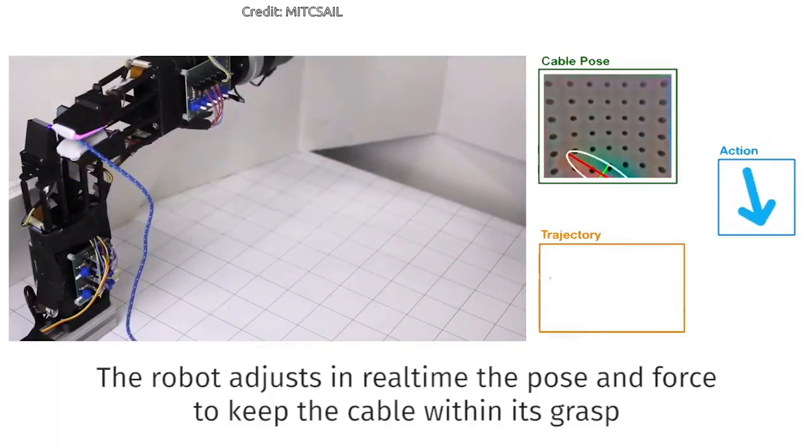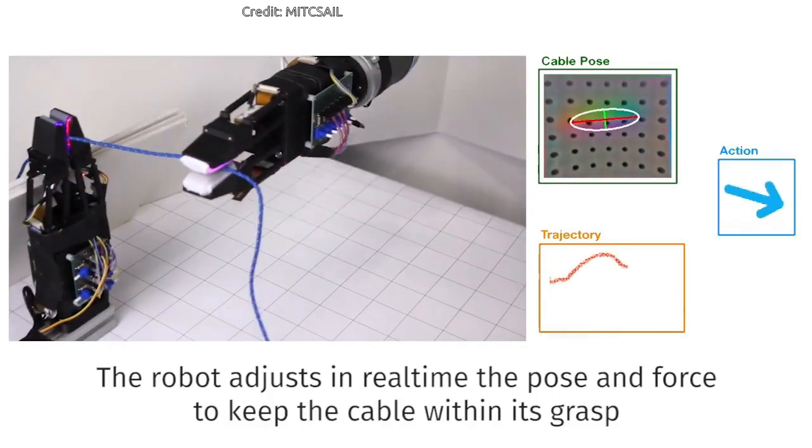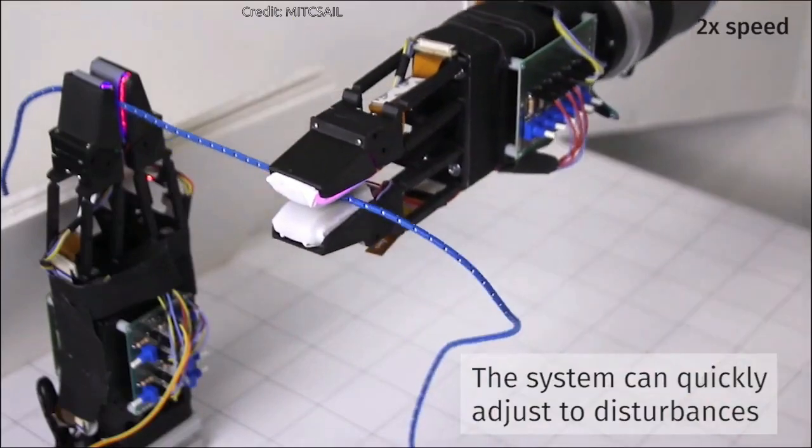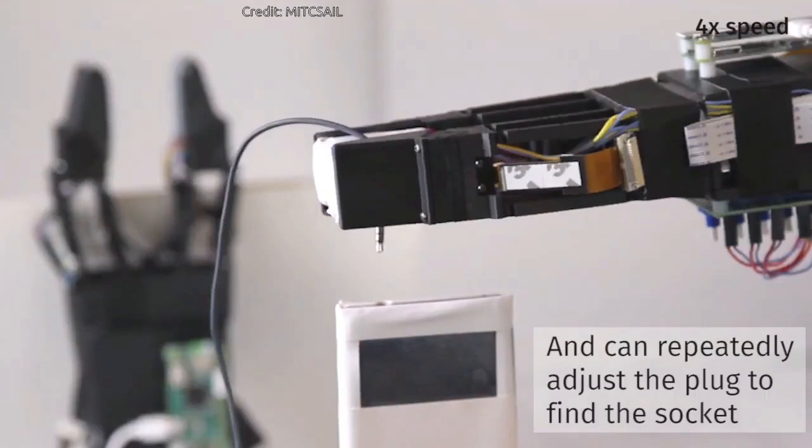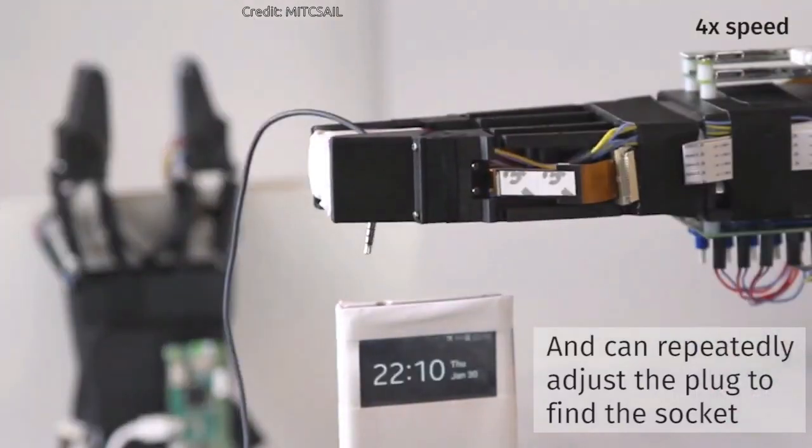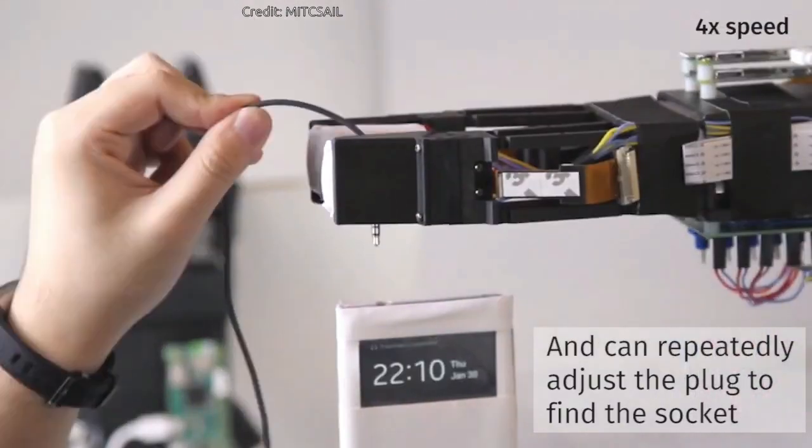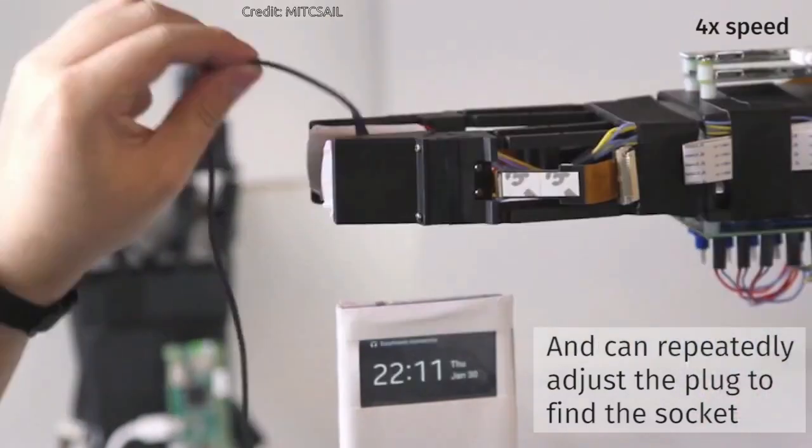The team's first step was to build a novel two-fingered gripper. The opposing fingers are lightweight and quick-moving, allowing nimble real-time adjustments of force and position.